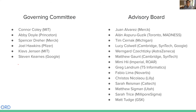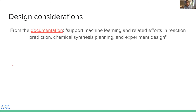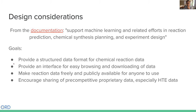The mission of the OpenReaction database is phrased quite succinctly. Our goal is to support machine learning and related efforts in reaction prediction, chemical synthesis planning, and experimental design. That mission manifests itself in a number of more specific goals.